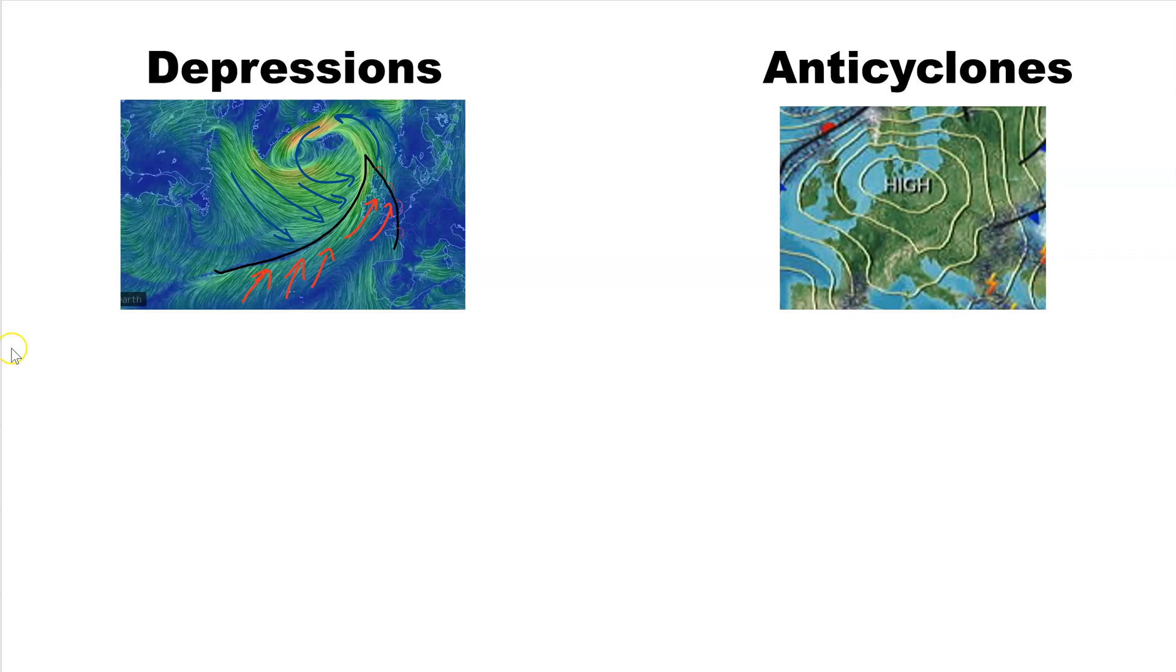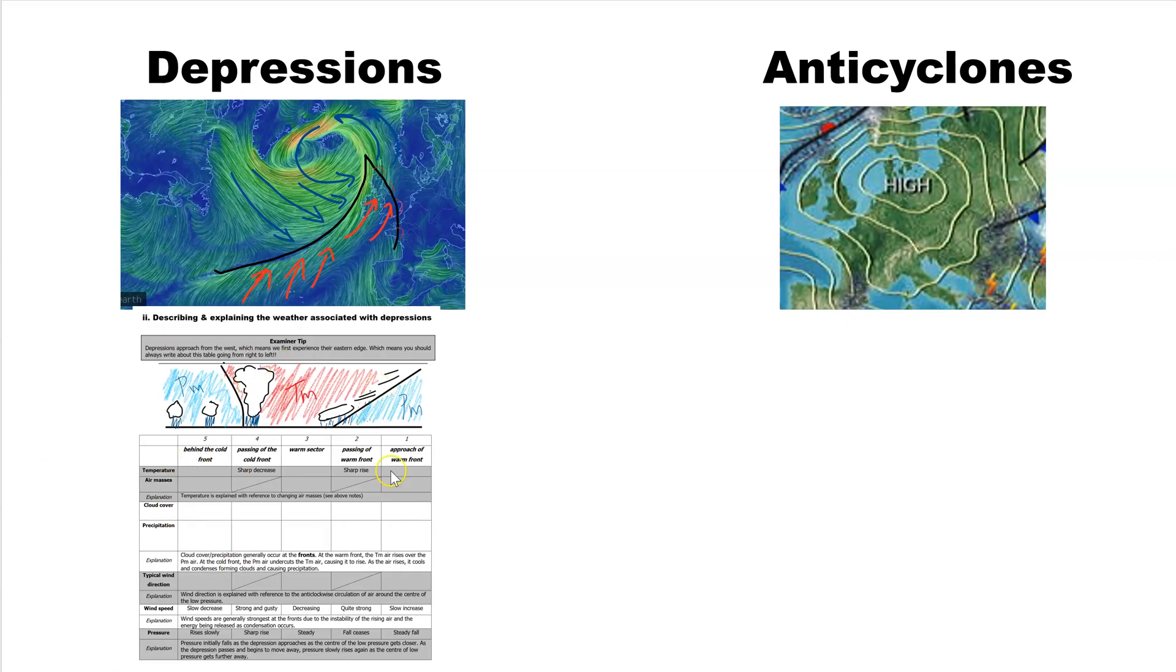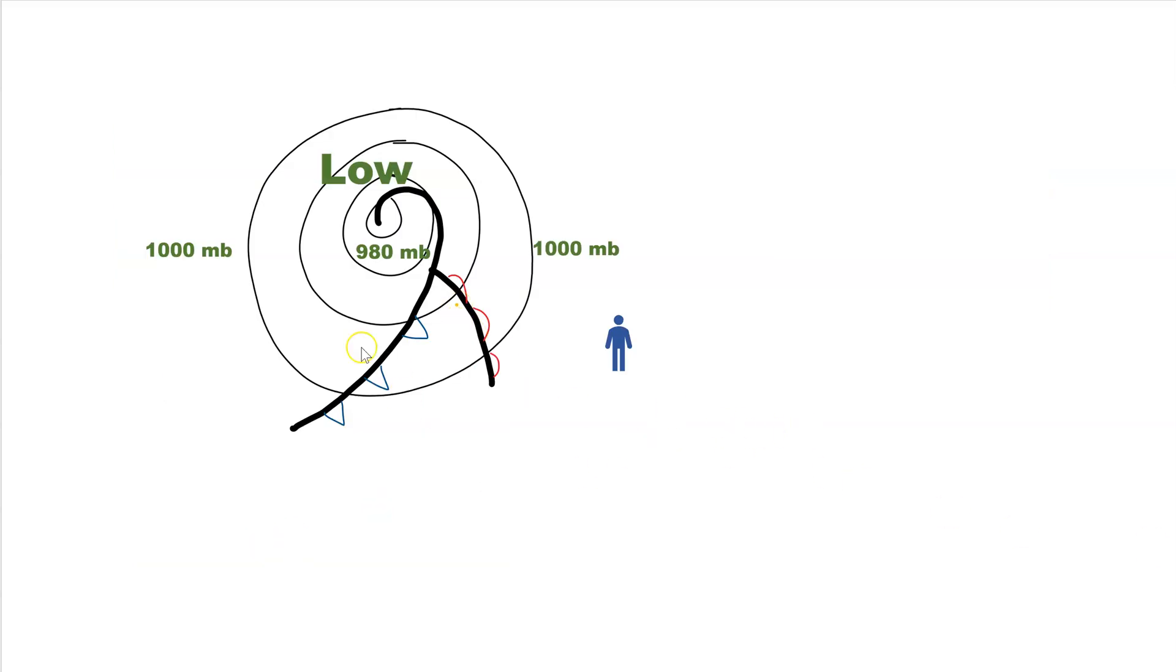So, let's take a look then at some more detail of the depressions and the weather, because as it passes over, this brings us different types of weather conditions. This table is extremely important. Spend some good time going through that. Remember, it takes about 24 hours for a depression to pass over, typically. And it approaches from the west, so you read here from the right to the left. And for each of these, you've got the description of what happens and the explanation. Just work your way across those rows, one by one, making sure that you know that in your head.